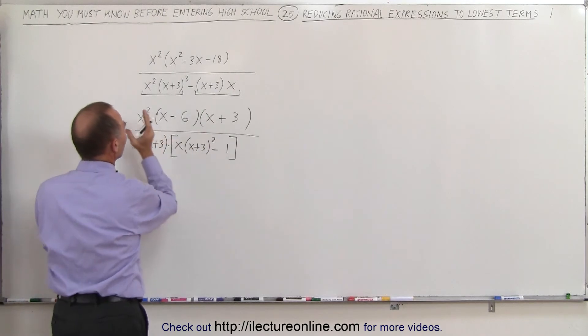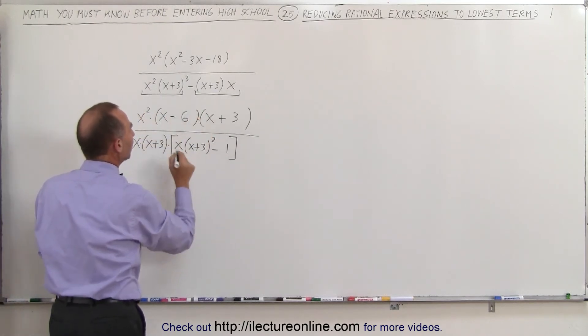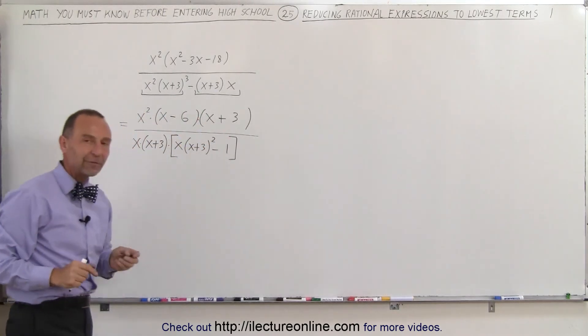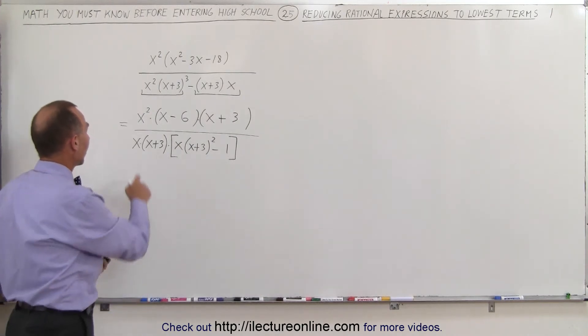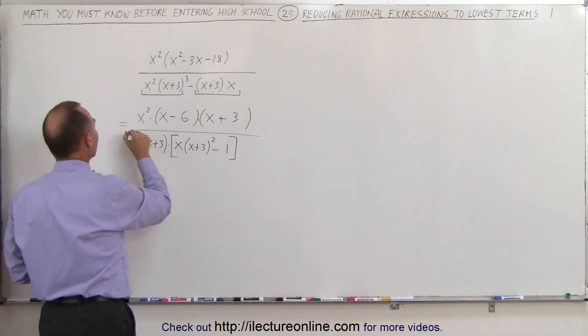As long as these things are multiplied together, I can start simplifying or factoring or reducing. So I can divide the denominator by x, and I can divide the numerator by an x. So instead of x squared, I have x, and here I have a 1.